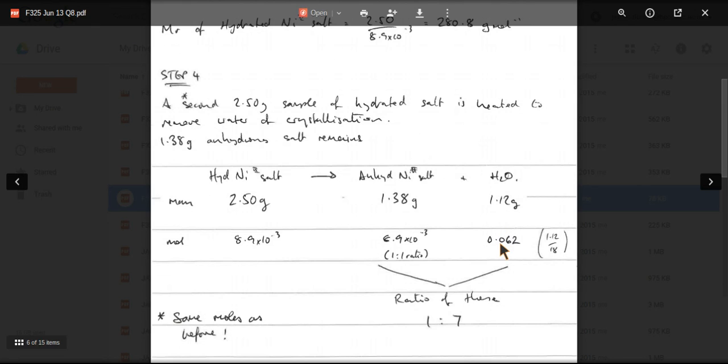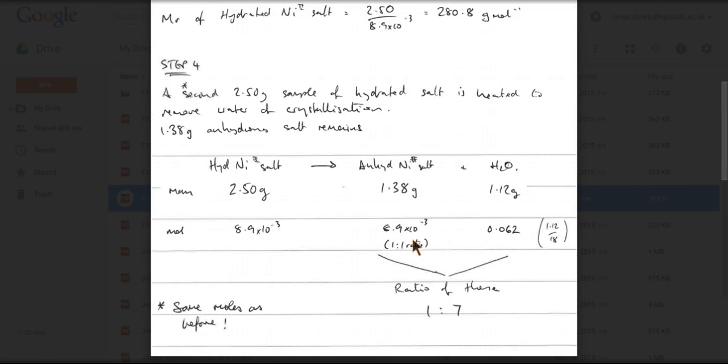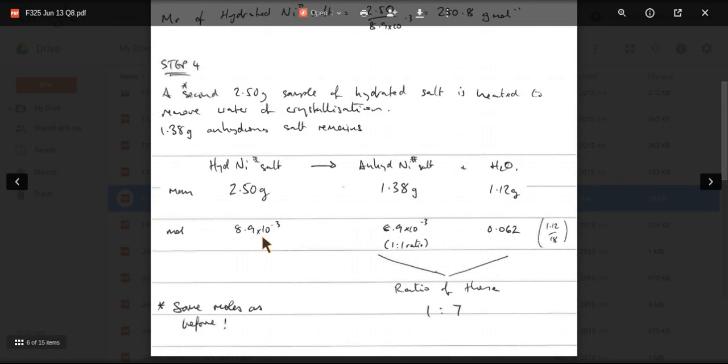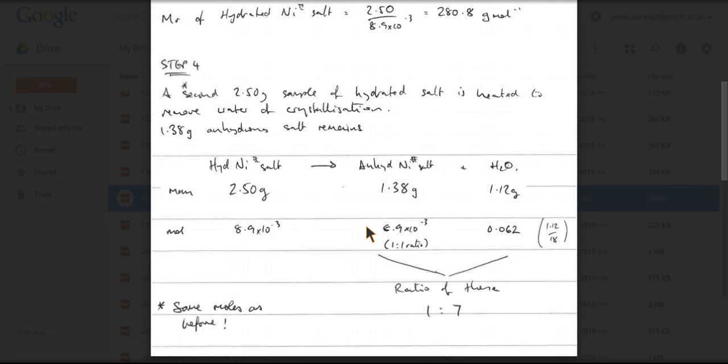So where can we go with that? Well, we know the 8.9 times 10 to the minus 3 moles of this must make the same number of moles of this. The moles of water that's produced, well that's going to be the mass of water over its MR. And we get 0.062.